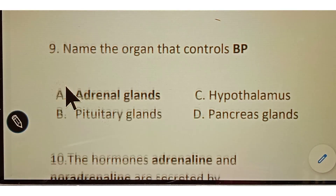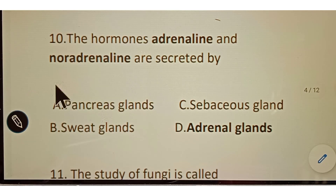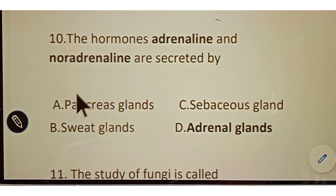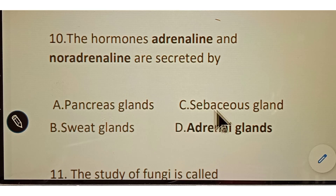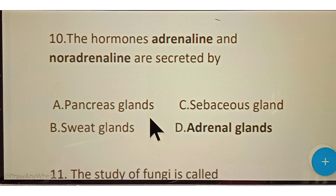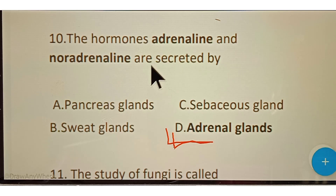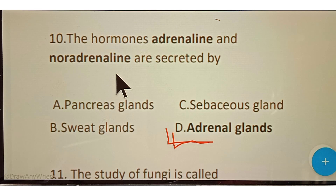Question number ten: the hormones adrenaline and noradrenaline are secreted by? Options given: A. Pancreas gland, B. Sweat glands, C. Sebaceous glands, D. Adrenal glands. The correct answer is option D, adrenal glands. Adrenal glands secrete adrenaline and noradrenaline hormones, which are responsible for controlling blood pressure.